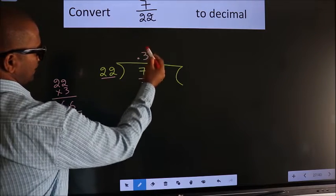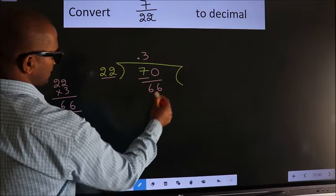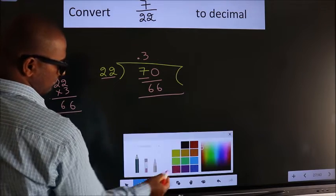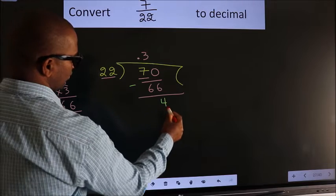So we take 3 times 66. Now we should subtract. We get 4.